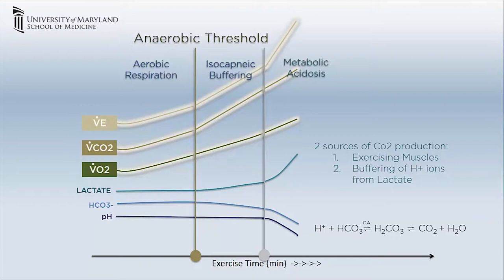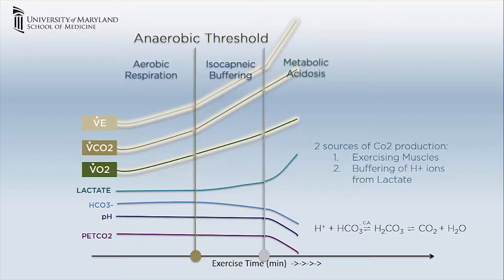We use end-tidal carbon dioxide as a non-invasive surrogate for PaCO2. When ETCO2 starts decreasing, it signifies the presence of metabolic acidosis. Note that carbon dioxide production and minute ventilation start increasing out of proportion to oxygen consumption at the anaerobic threshold. When minute ventilation starts increasing out of proportion to carbon dioxide production, it signifies the beginning of the third phase of metabolic acidosis.